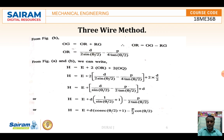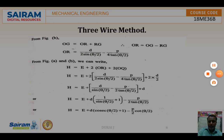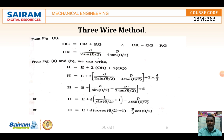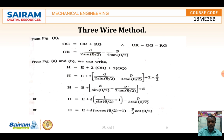Substituting the values: H = E + 2 × [D/(2 sin(θ/2)) − P/(4 tan(θ/2))] + 2 × (D/2). This simplifies to H = E + D/sin(θ/2) − P/(2 tan(θ/2)) + D. Therefore H = E + D × [1/sin(θ/2) + 1] − P/(2 tan(θ/2)).